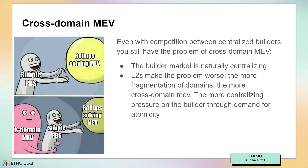Then you have cross-domain MEV — just when you think you're out, they pull you back in. Even if you have competition between these centralized builders, you still have the problem of cross-domain MEV. The builder market is already naturally very centralizing due to economies of scale. But layer 2s, just because of their existence, make the problem even worse — the more fragmentation and domains there are, the more fragmented liquidity and trading volume, the more cross-domain MEV there will be. And this creates a strong centralizing pressure on the builder role through demand for atomic transactions.